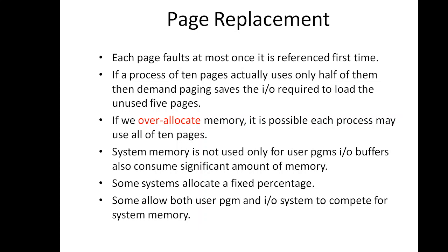This representation is not strictly accurate. If a process of 10 pages actually uses only half of them, that is only 5 pages, then demand paging will save the IO necessary to load the 5 pages that are never used. So we could increase the degree of multiprogramming with the help of page fault, by running twice the number of processes.